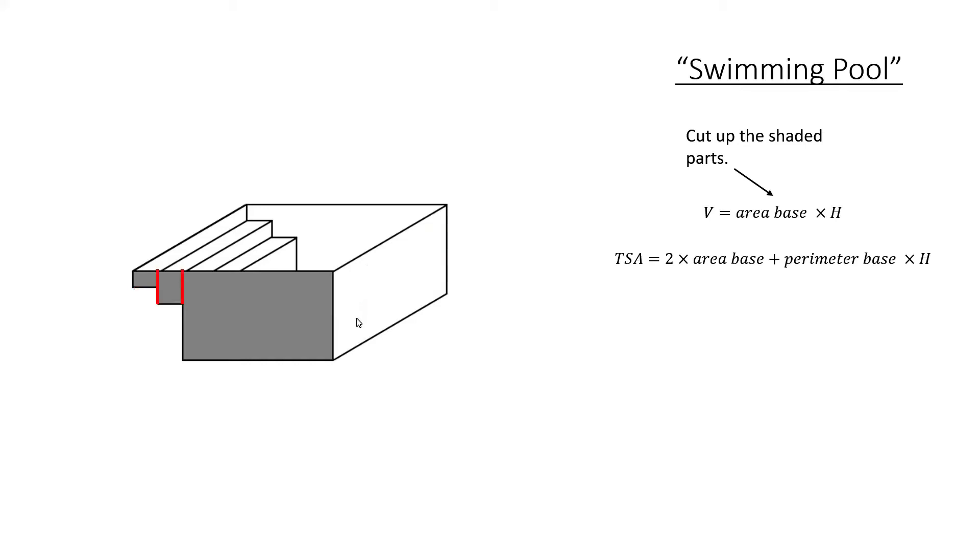Another way that we could have cut it up is to cut it up vertically so that you've got a little slice for the top step. The second step will give you another slice and then a big rectangle for the third one, for the bigger body of the swimming pool.